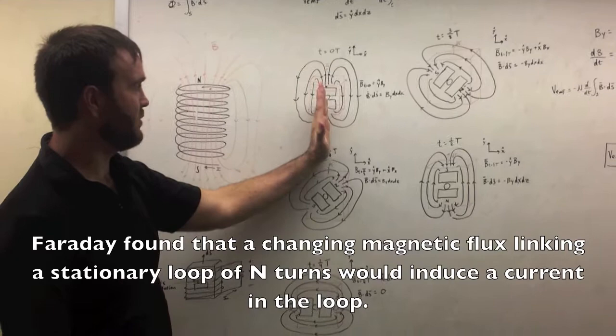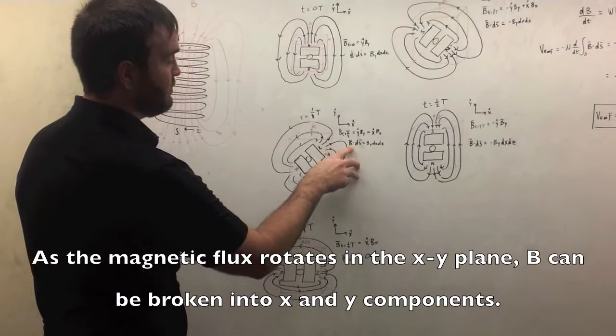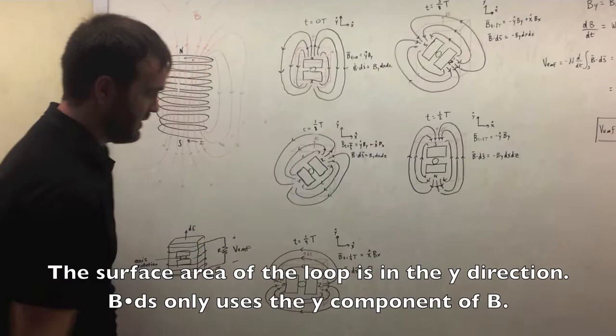So we have a stationary loop, and we're going to have a rotating magnetic field. As it rotates, you can see that the only part of the B that matters is the y-hat direction. Because we take B dot dS, you'll only be left with the y-hat component if dS is in the y-hat direction.